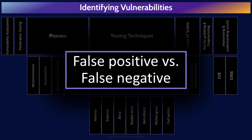Finally, false positives and false negatives are important challenges we need to deal with. A false positive is where we identify a potential vulnerability and upon further investigation realize there is no vulnerability — we've spent time chasing something that wasn't there. False negatives are far worse: this is where a vulnerability exists and we don't identify it. We're blind to the vulnerability.